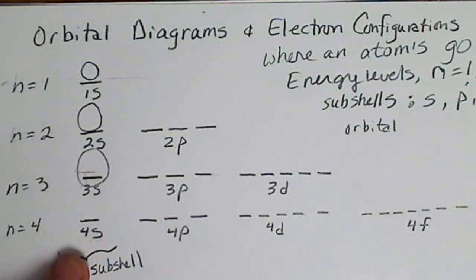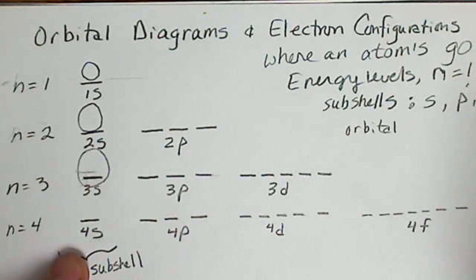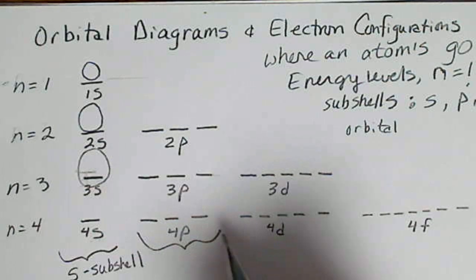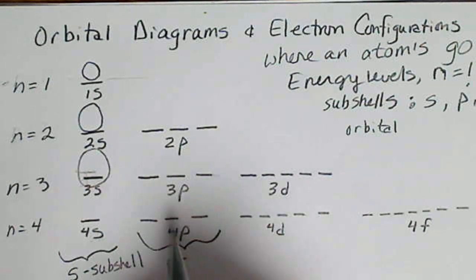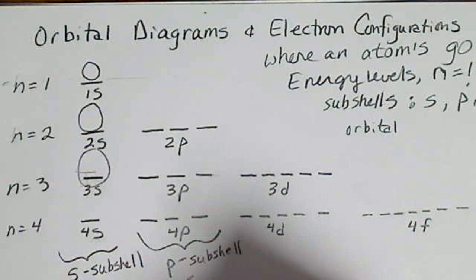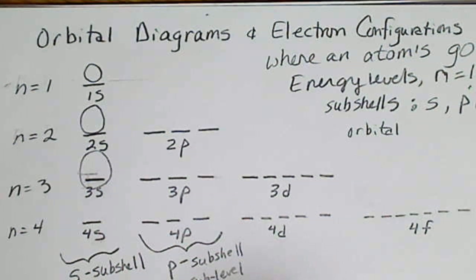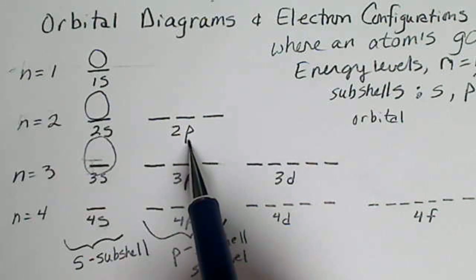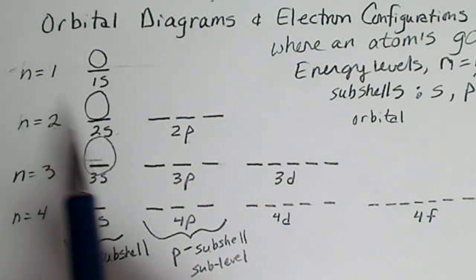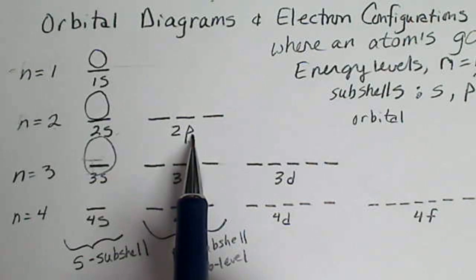These n values are the same n values that we saw on the hydrogen atom. The P subshell is the group of all three orbitals. So the subshell, sometimes called a sub-level, the P sub-level shows up when n equals 2. So the rules that we had discussed earlier, when n equals 2, there are 2 subshells.